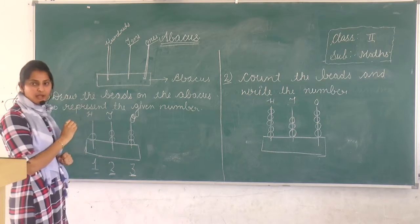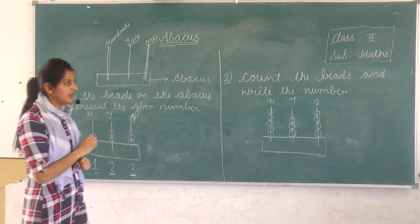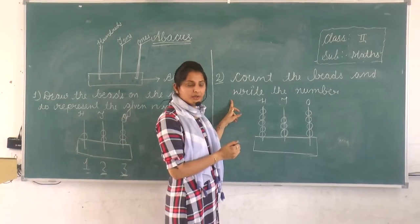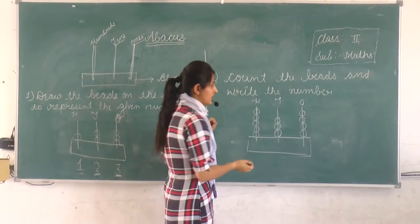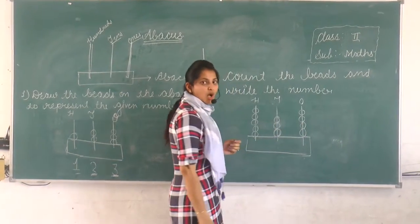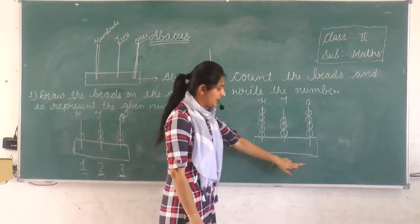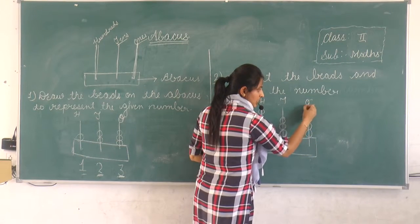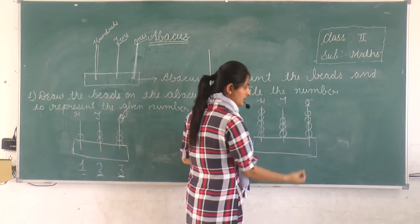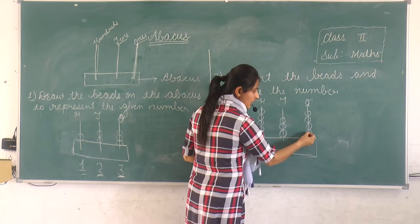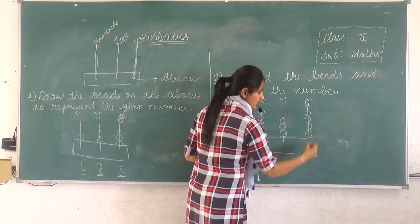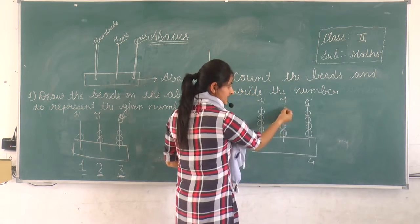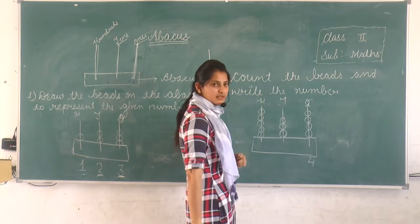Our next question is: count the beads and write the number. Here some beads are given; you count the beads and write the number. See, in the ones column — in the ones spike — how many beads are here? One, two, three, four. Then you write here: four. In the tens spike, how many beads are here? One, two, three. Then you write here: three.